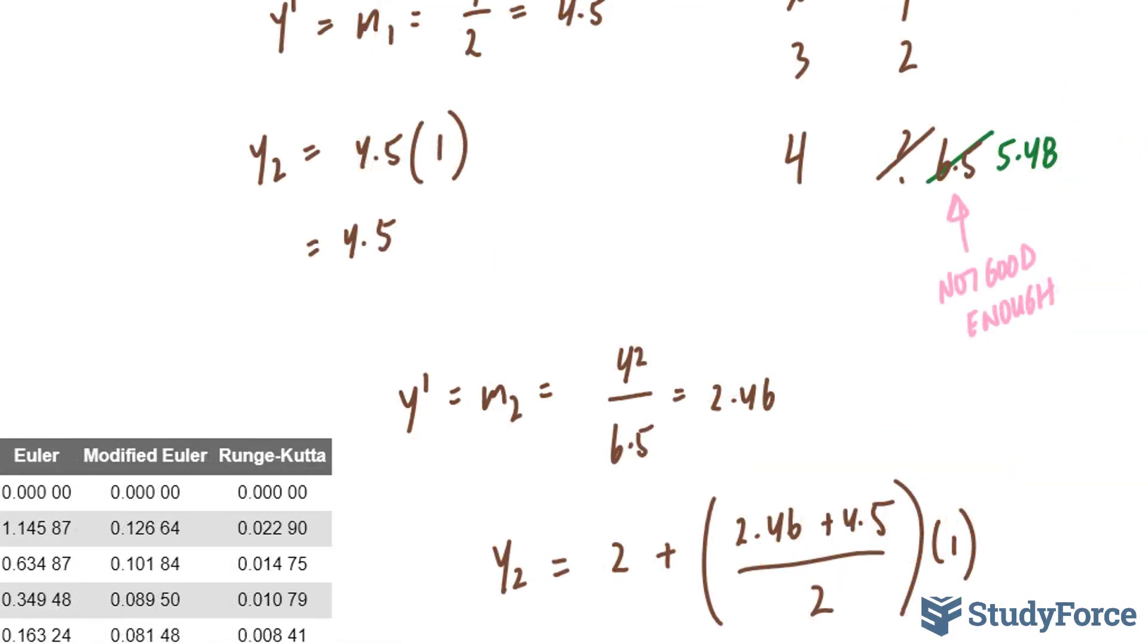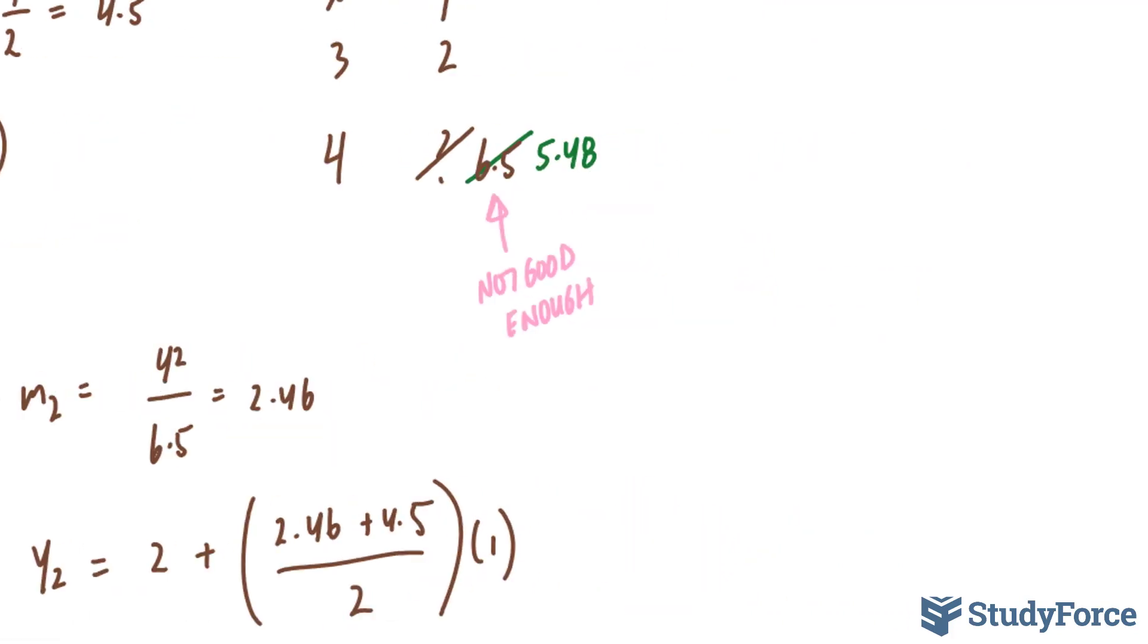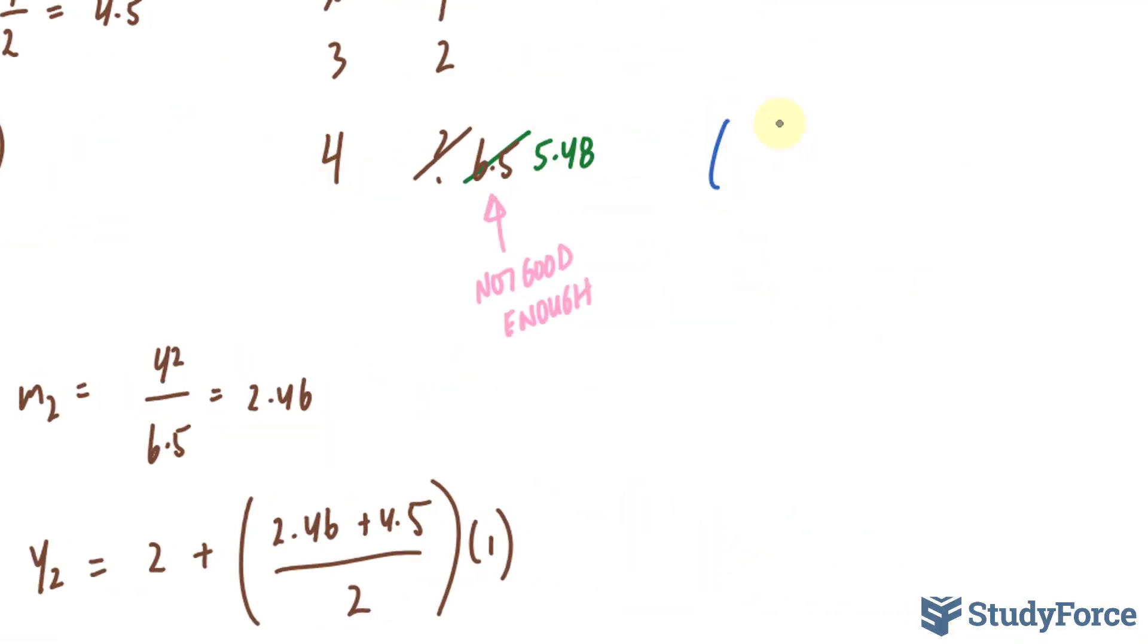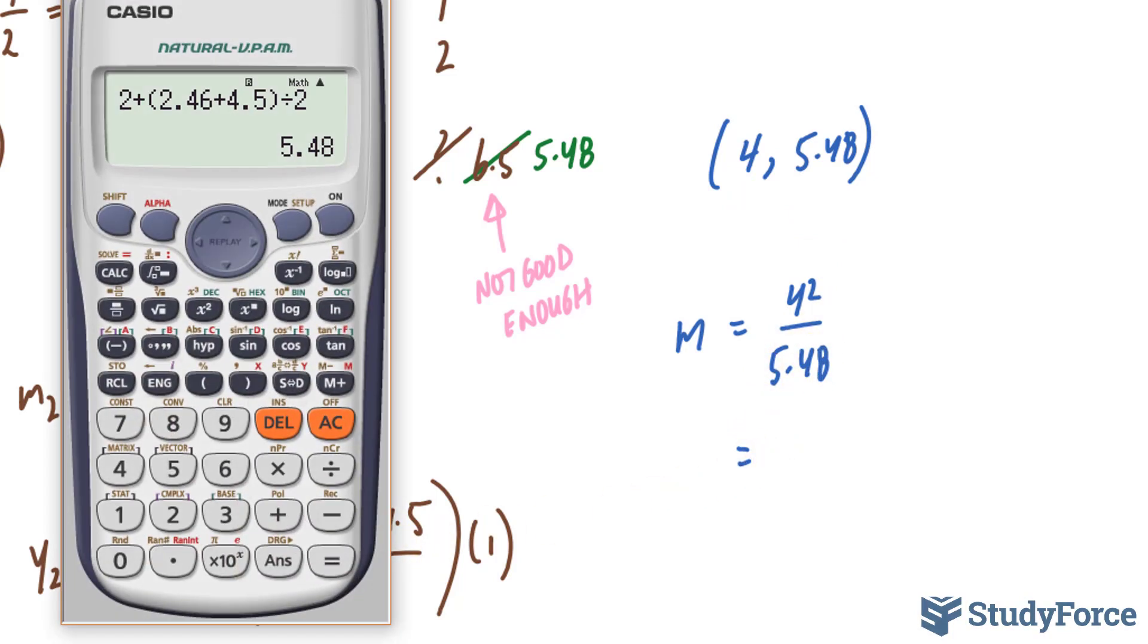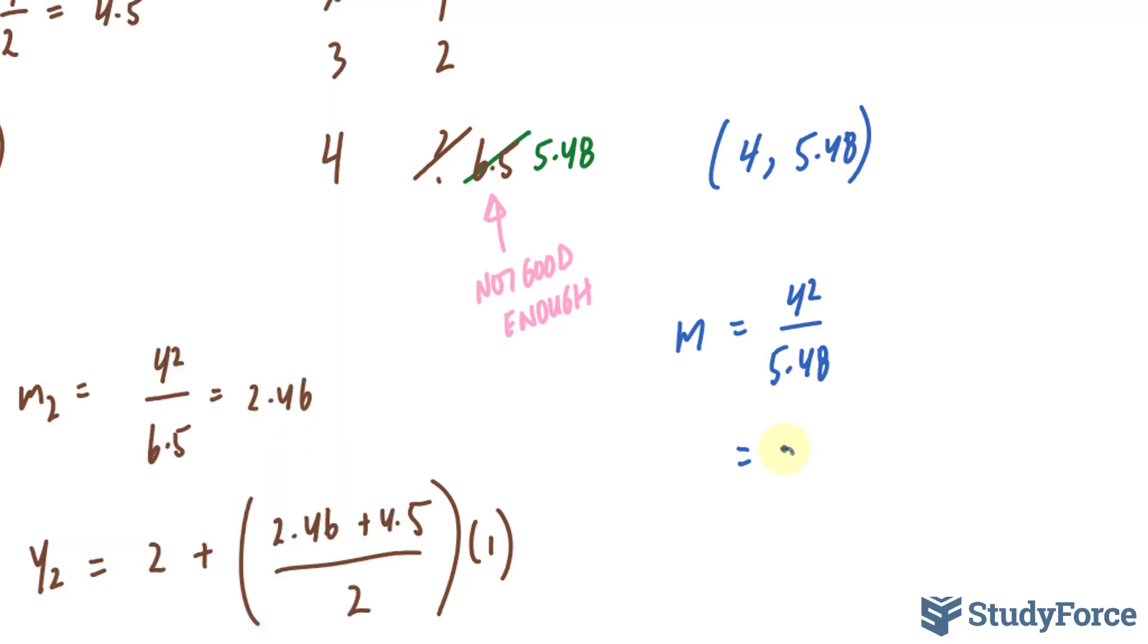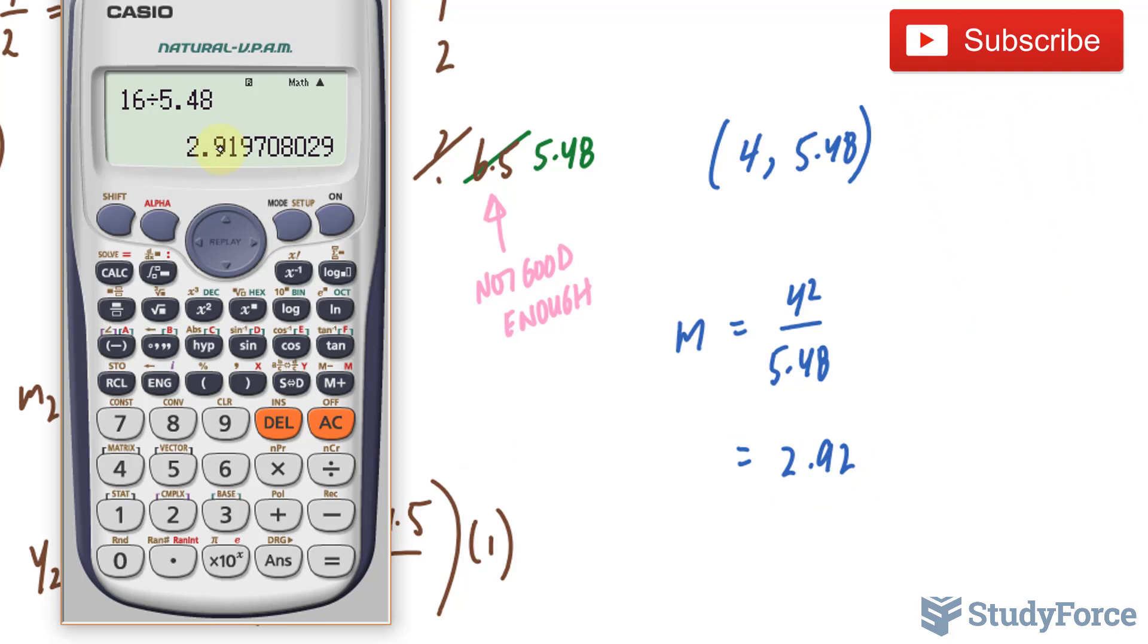Now that we've corrected our ordinate, I'm going to find a new slope using 4 and 5.48 as a point. My new slope is x²/y, so 4²/5.48. Let's find our new slope: 16 ÷ 5.48 = 2.912. I'm rounding here, although you shouldn't really round; I'm just doing this for simplicity's sake.